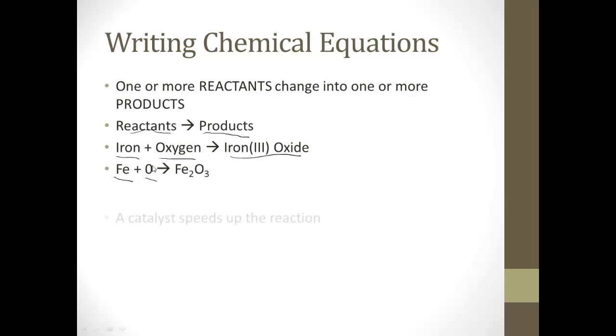All right, then you can have something like a catalyst, which speeds up a reaction, and it'll be written like this. This is an example. You have hydrogen peroxide in the presence of MnO2, and it's written up above the arrow like this, making water and oxygen.